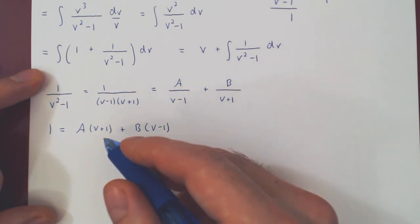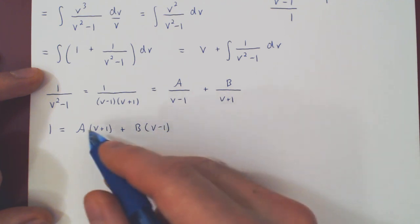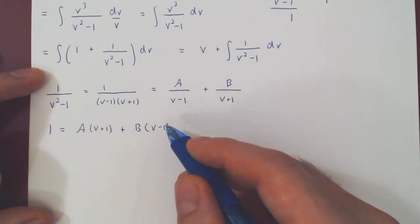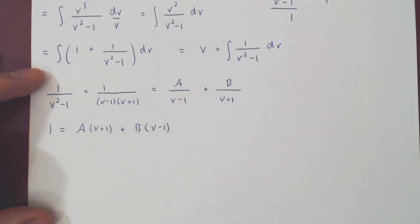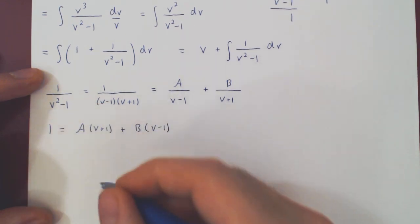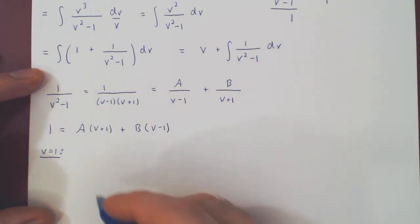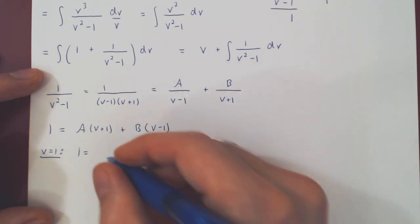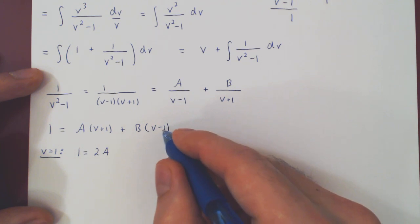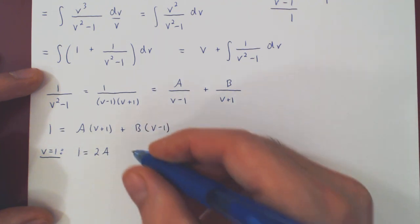And here you have again two options. You can choose v to be negative 1 and then 1, or you can multiply out and regroup the constant terms and the multiples of v's as you wish. Let's just pick two values of v. So we'll pick v to be 1 first. So if v is 1, well the left hand side is always 1. So we'll get 1 plus 1, 2 times A, plus 1 minus 1 is 0, 0, B. So if 1 equals 2A, of course A is 1 half.